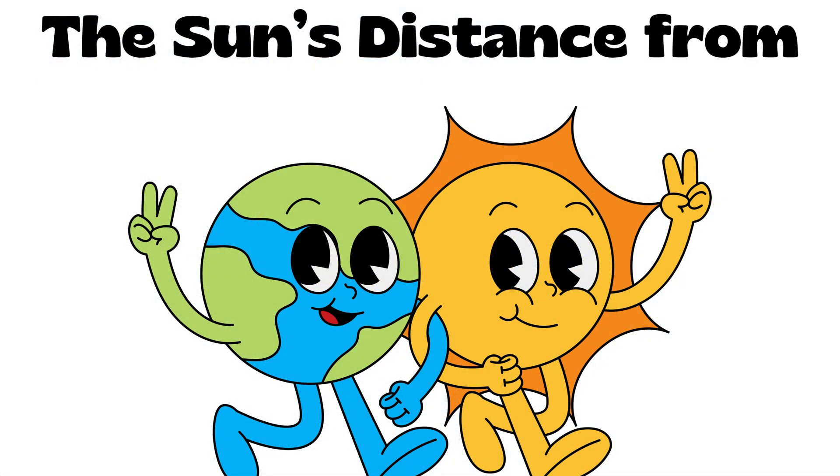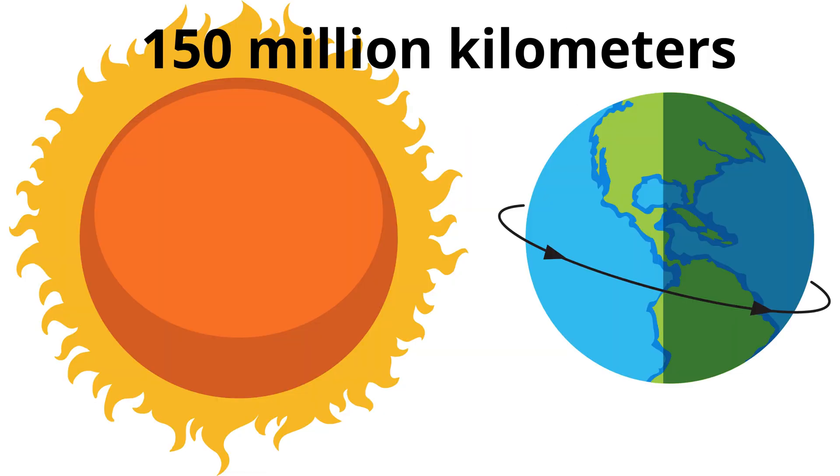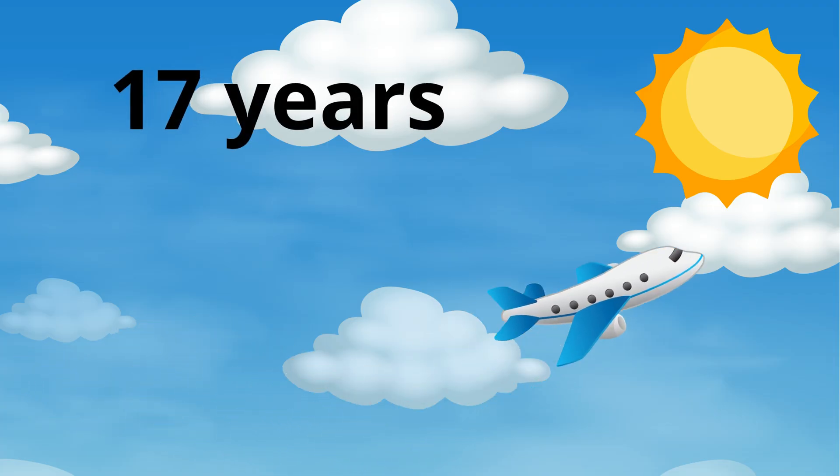The sun's distance from Earth. The sun is very far from Earth. It is about 150 million kilometers away from us. This means that if you took an airplane to the sun at regular airplane speed, it would take about 17 years to get there.